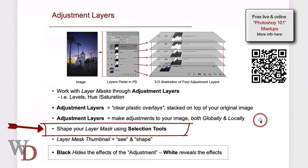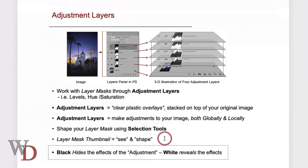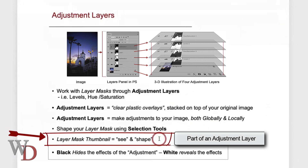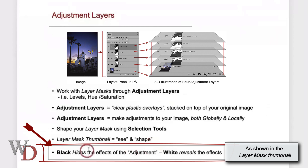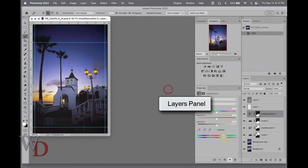You shape your layer mask using selection tools, and there are nine selection tools I'm going to show you. The layer mask thumbnail — which you'll see in a minute — is where you see and shape your layer mask. You'll need to know this, and you'll see it over and over: black hides the effects of the adjustment, and white reveals the effects of an adjustment.